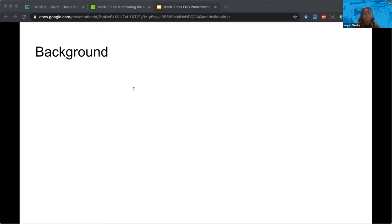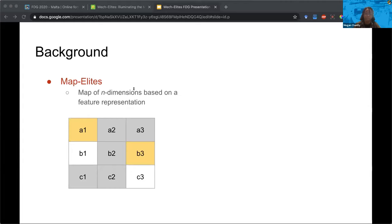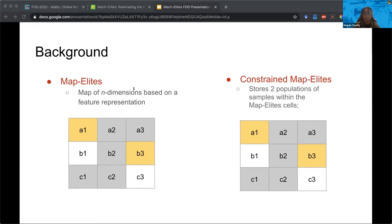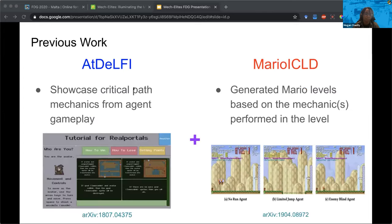So first, a bit of background on the algorithms used in this project. As a basis, we use the MAP-Elites algorithm, which is a quality diversity search algorithm that maintains a map of n dimensions of cells containing samples within a specific feature representation. The highest quality samples, also known as the elites, are used to generate even more samples.